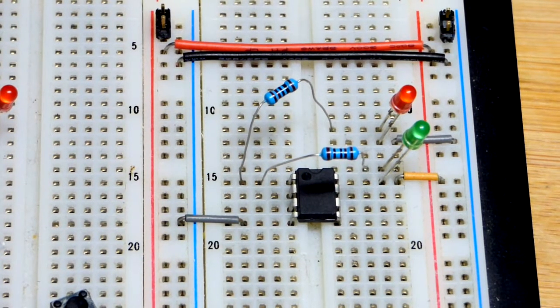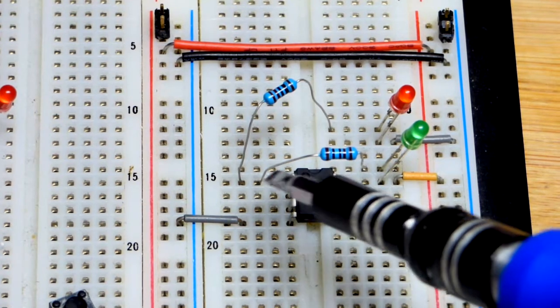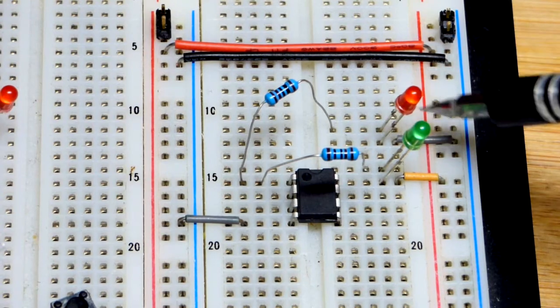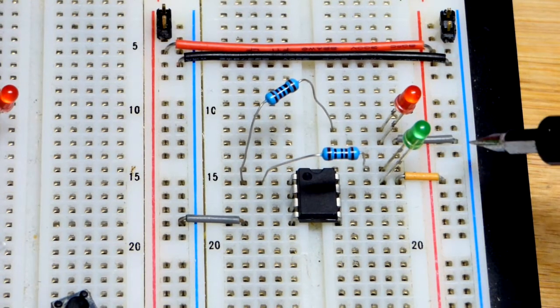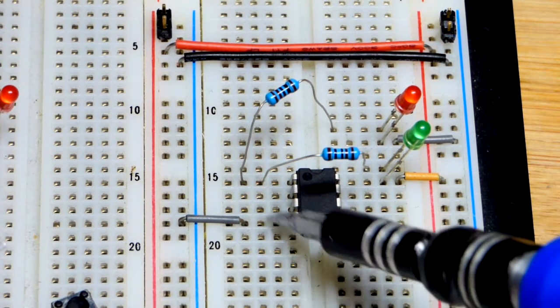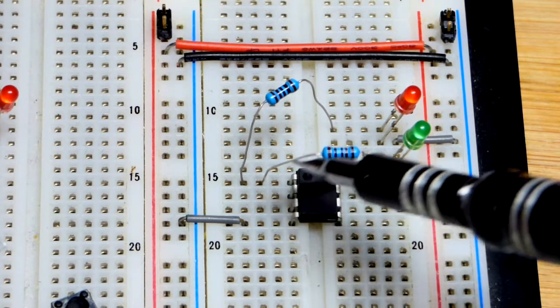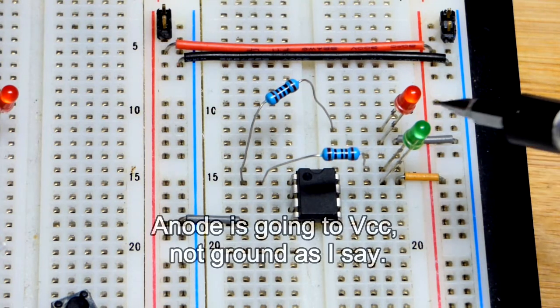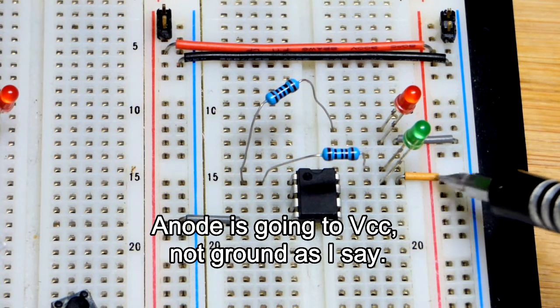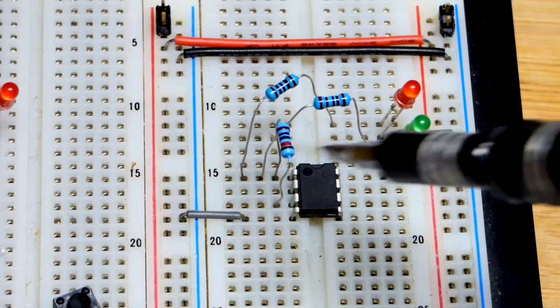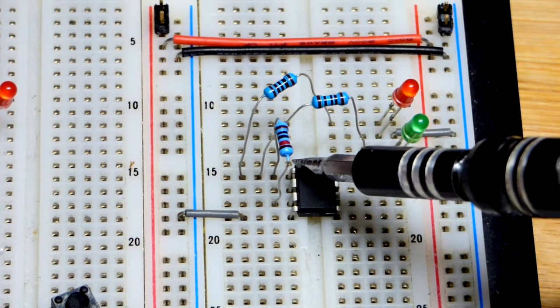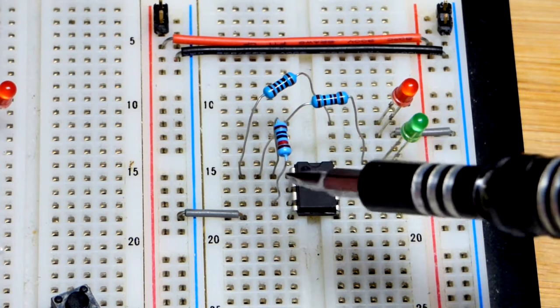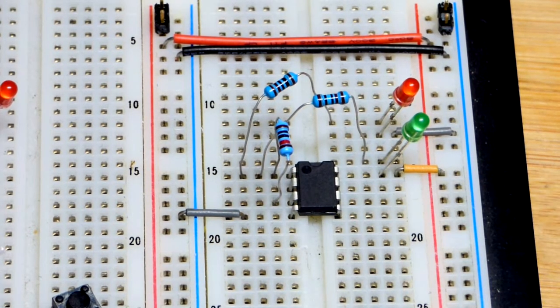Here we are in the breadboard. I'll go over this quickly. We have the output, a one kilo ohm resistor going to the long lead, the anode of the red LED, short lead the cathode going to ground. You got to put them in the right direction for them to light up. With the one kilo ohm resistor here we are going to the short lead, the cathode of the green LED, long lead the anode is going to ground right there. The 10 kilo ohm feedback resistor, positive feedback, is going from the output there to the non-inverting input right there.